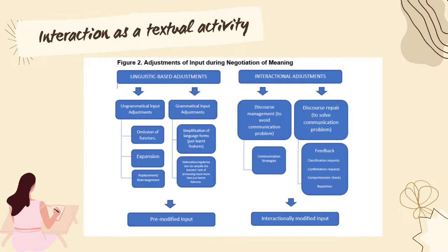Learners need opportunities to interact with other speakers and to work together to understand each other's messages. Linguistic adjustments play a huge role in language acquisition, and taking part in interaction can facilitate second language development. There are also ways to avoid communication problems through conversational tactics such as clarification requests, confirmation requests, comprehension checks, and repetition.